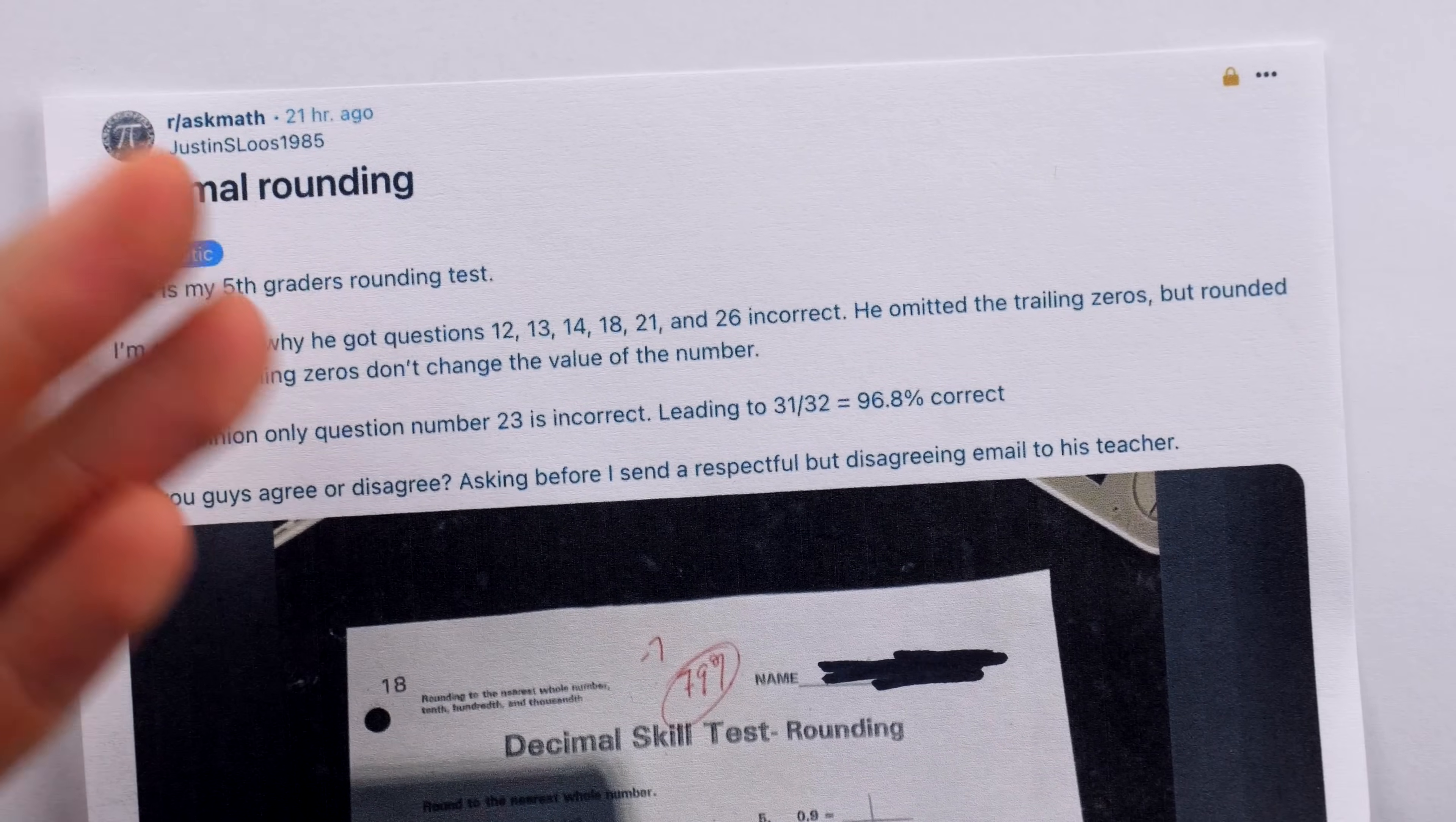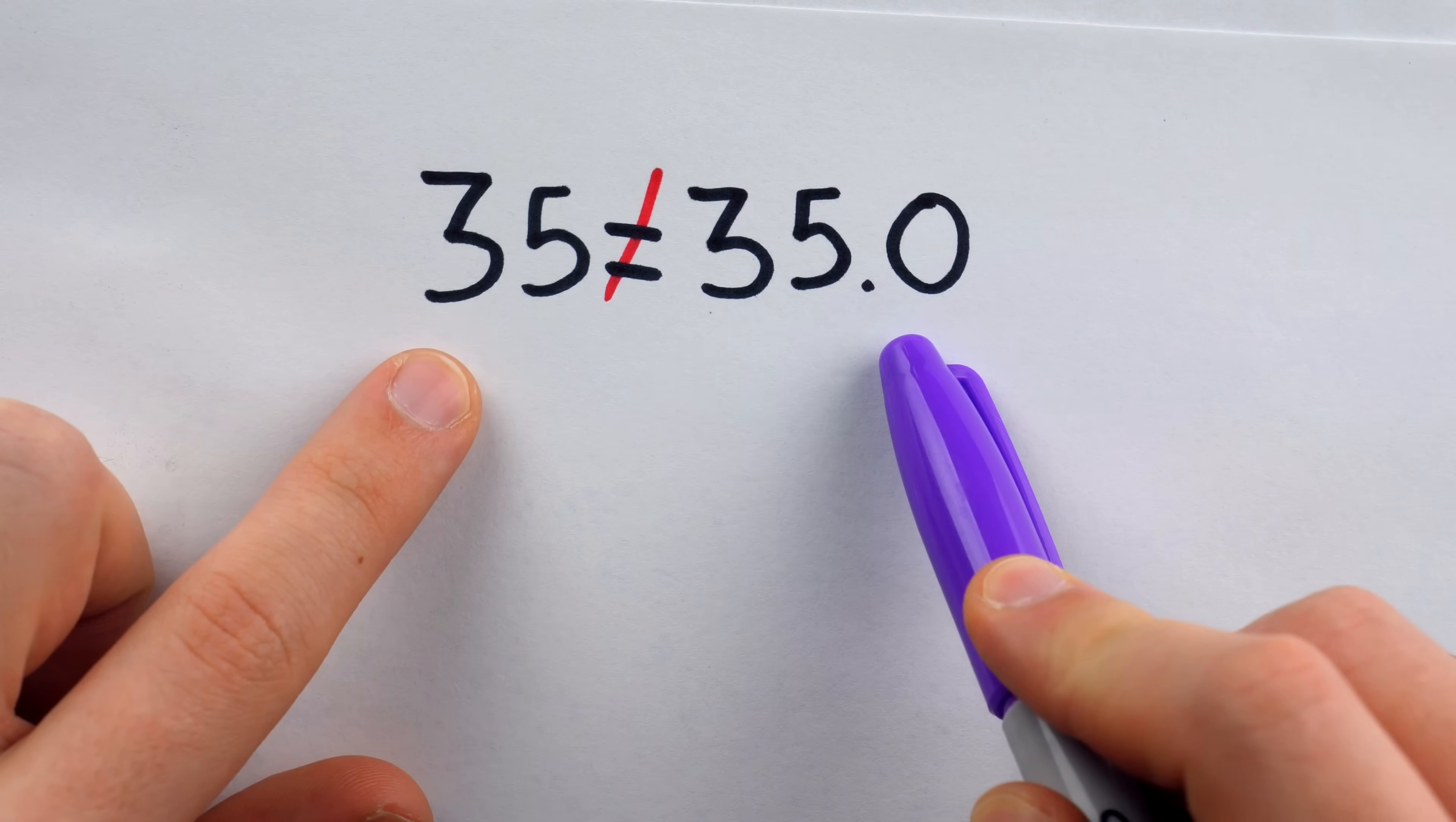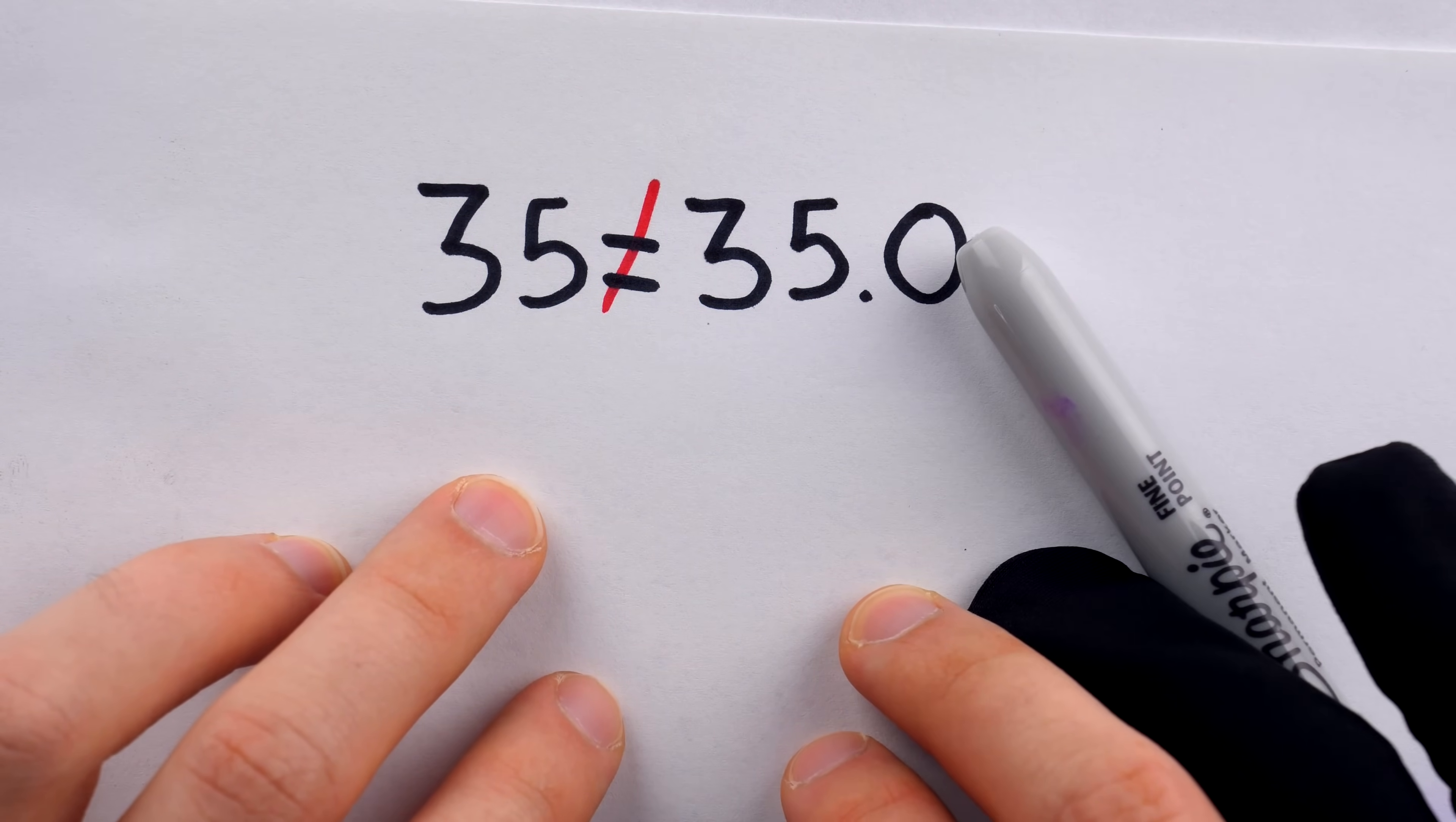The student's case here, and of course his father's case, is very easy to see. How are you going to say that my answer of 35 is wrong and the correct answer is 35.0? Are these numbers not equal? How could this possibly be marked wrong? Of course, in the context of pure mathematics and what numbers these symbols represent, these two things are equal. This is 35 wholes. This is 35 wholes and 0 tenths. Those numbers are equal.